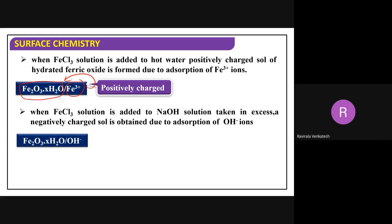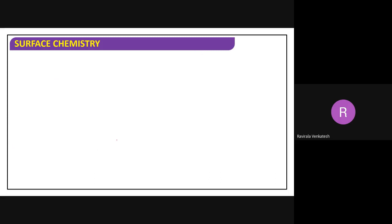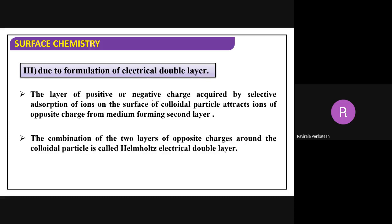When the same ferric oxide solution is treated with NaOH, the excess OH⁻ ions are adsorbed on the surface, making it negatively charged. This shows that the charge — positive or negative — depends on which ion is adsorbed on the surface. The third reason is due to the formation of an electrical double layer: a layer of positive or negative charge acquired by selective adsorption of ions attracts ions of opposite charge from the medium to form a second layer — called the Helmholtz electrical double layer.